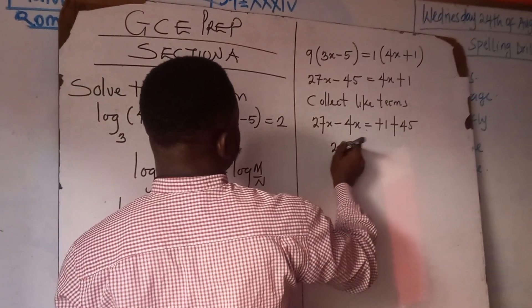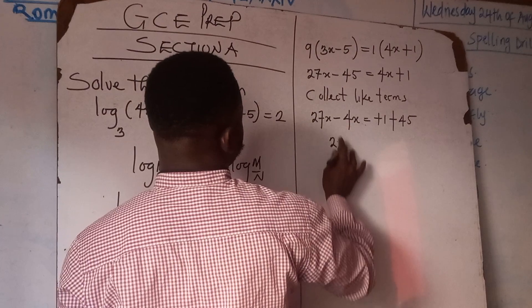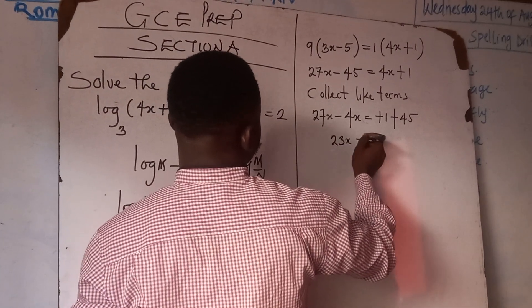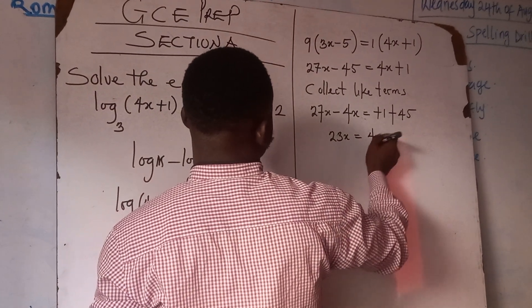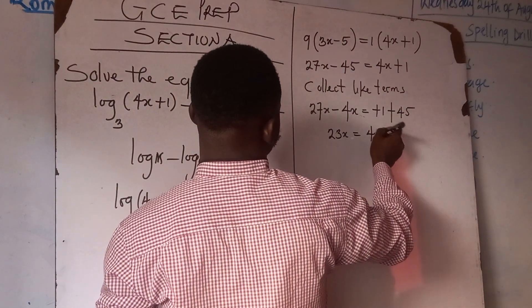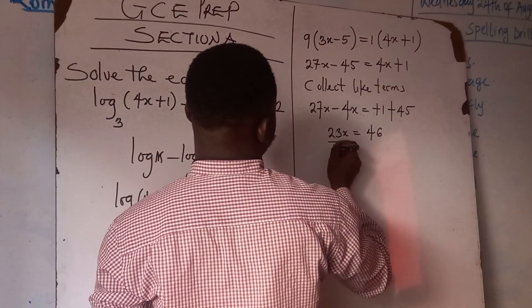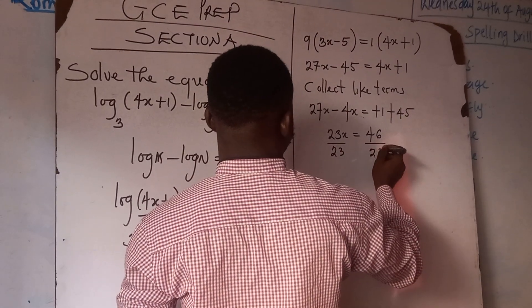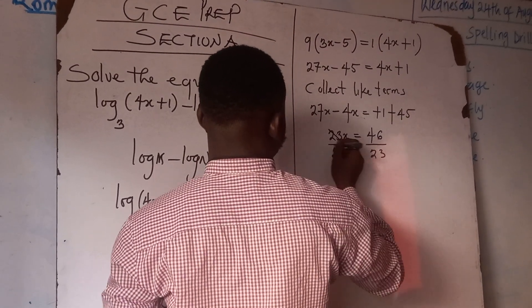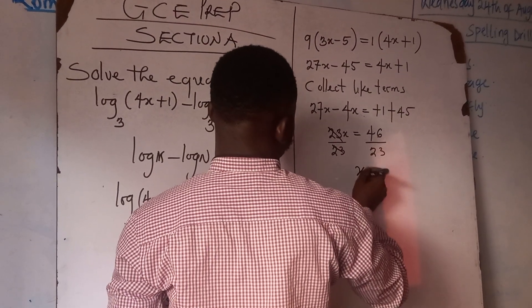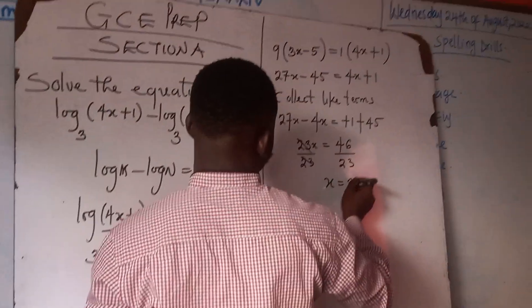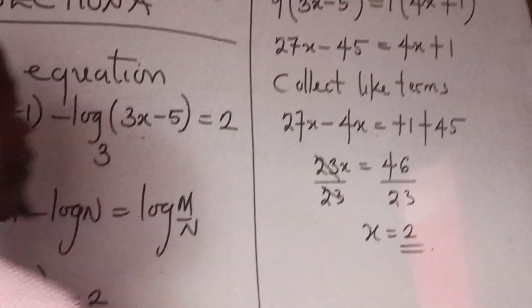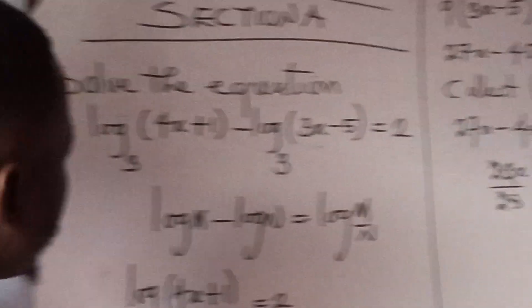We collect like terms: 27x minus 4x equals 1 plus 45, which gives us 23x equals 46, therefore x equals 2.